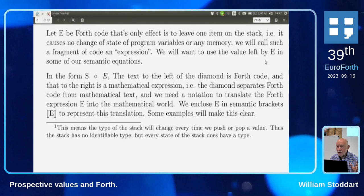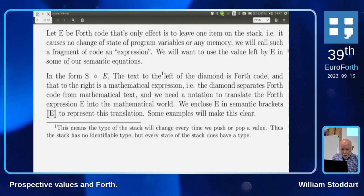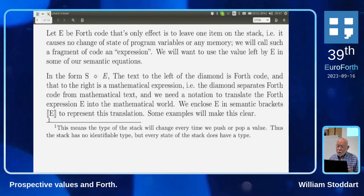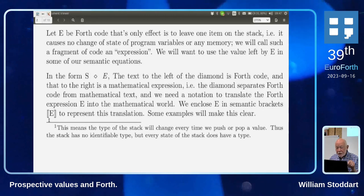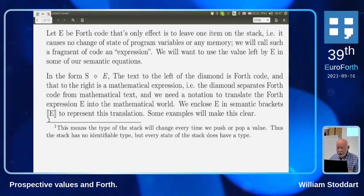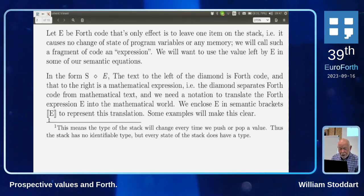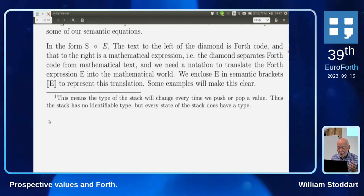We need to translate bits of Forth into bits of mathematics, using what are called semantic brackets — ⟦ ⟧ — used when dealing with two different languages simultaneously. Inside these brackets are fragments of Forth, and what comes out is a mathematical expression: a translation from Forth to mathematics. For example, 'x 1 plus' would translate to x + 1.